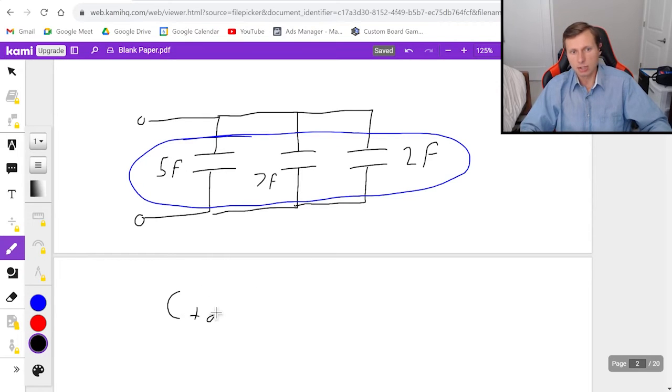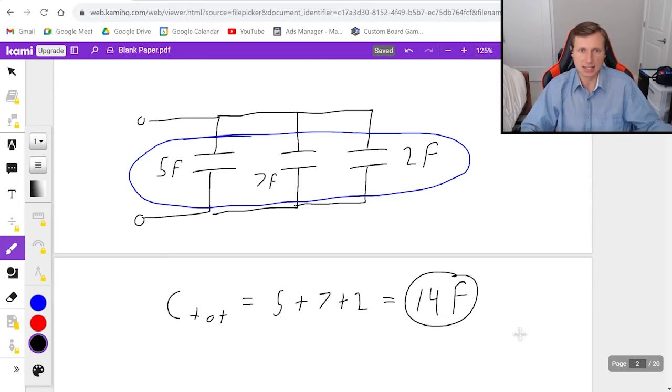So then here C total is just going to be five plus seven plus two. That gets me 14. 14 farads is our final answer. Easy as that.